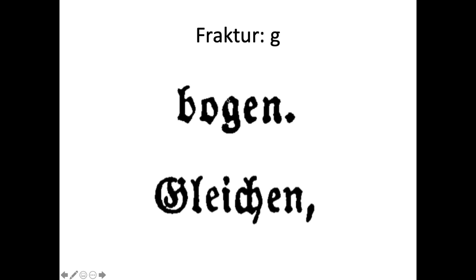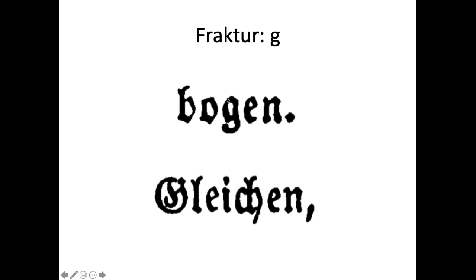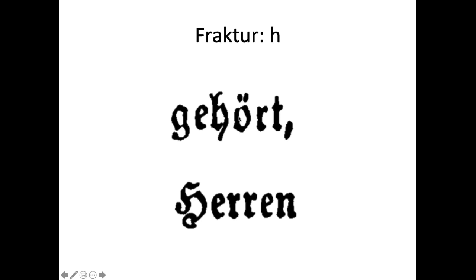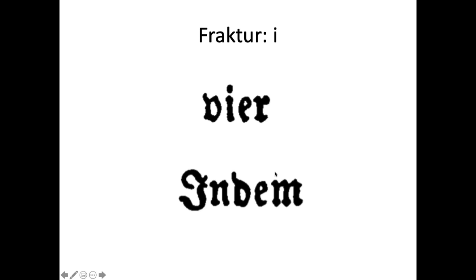The capital F looks recognizable once you're used to it, though it can look a little like a J. The G — 'Bogen' — is pretty easy. The capital G in 'Gleichen' is pretty fancy looking; it looks a little bit like an O, but it is a G. The H — 'Gehört' — is a little embellished but recognizable, with the tail coming quite far down. The capital H in 'Heeren' looks just like a big ornate version of the lowercase h.